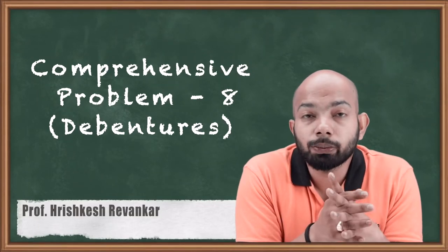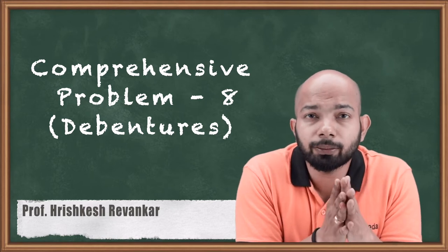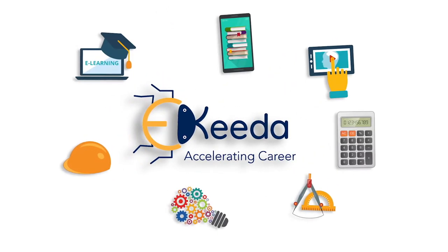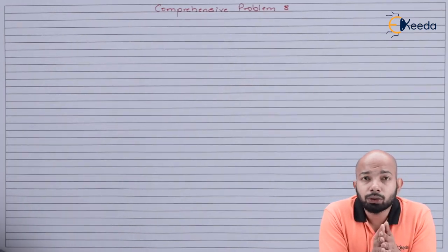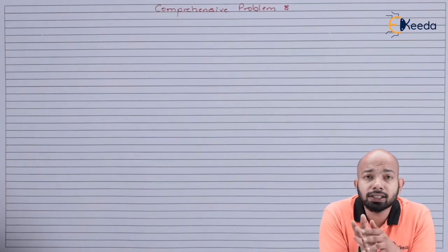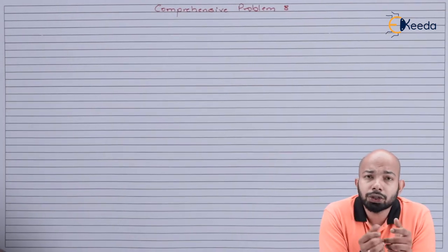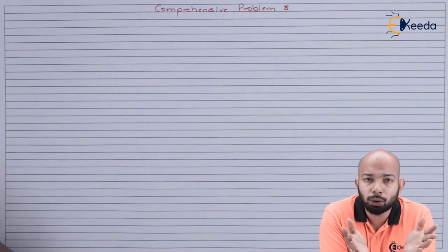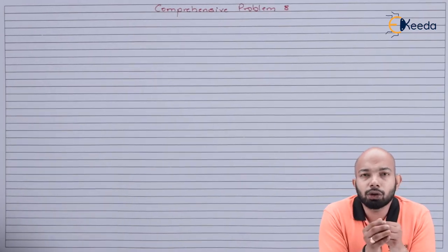Hello friends. We will be discussing an illustration related to the last case studies of this specific chapter — the issue of debentures. In the previous problems we have understood different case studies: oversubscription, undersubscription, both merged with pro-rata, discount, issue of shares at par, premium, etc. This is the last problem we will be dealing with and it will have a mixture of combinations.